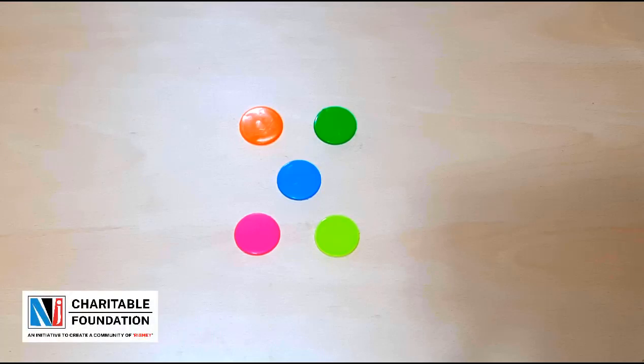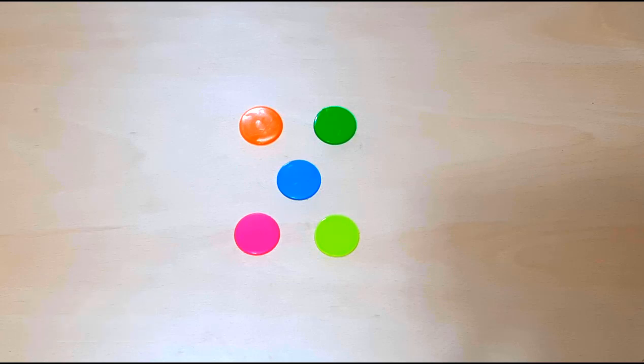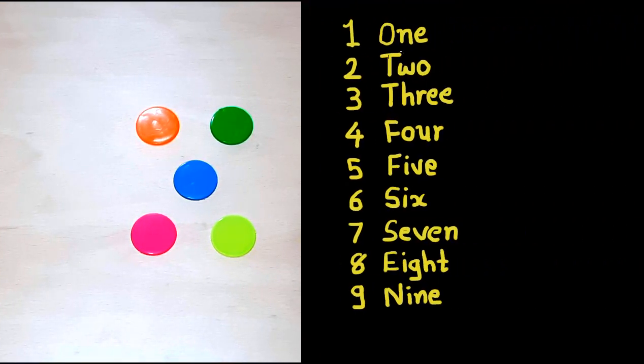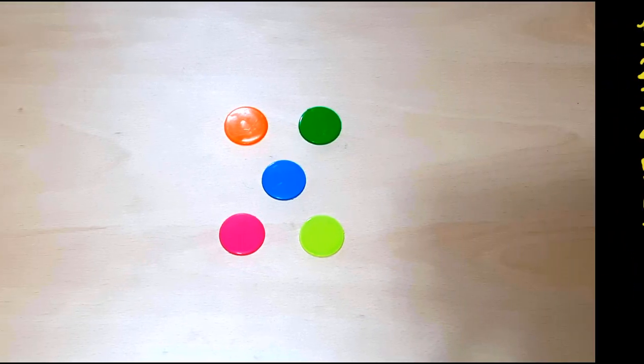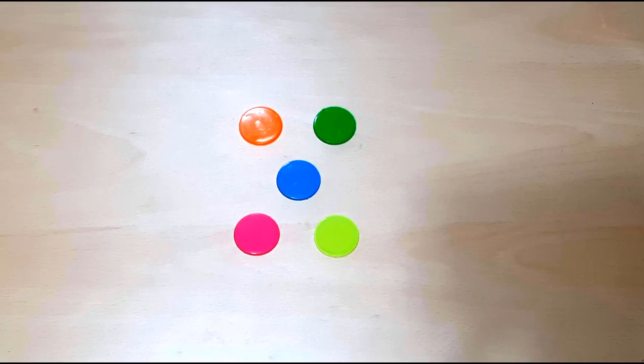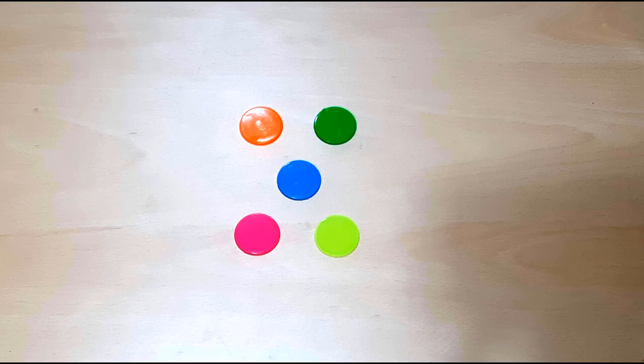Namo Namo friends, welcome to NJ Charitable Foundation. Friends, by now you have learned to count up to nine: one, two, three, four, five, six, seven, eight, nine. And I hope now you are able to write these numbers in digits and words.